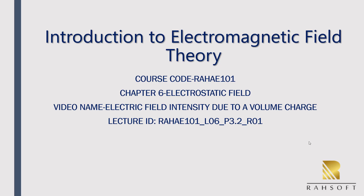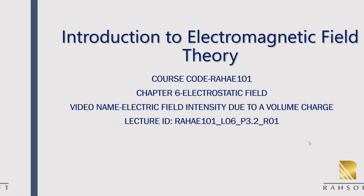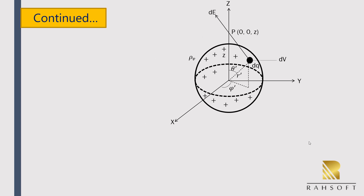In this video we will see how to get electrical intensity due to volume charge. Consider a sphere of radius A which is at the origin and the volume charge density is ρV, which is the total charge per unit volume. So ρV is equal to Q divided by volume.